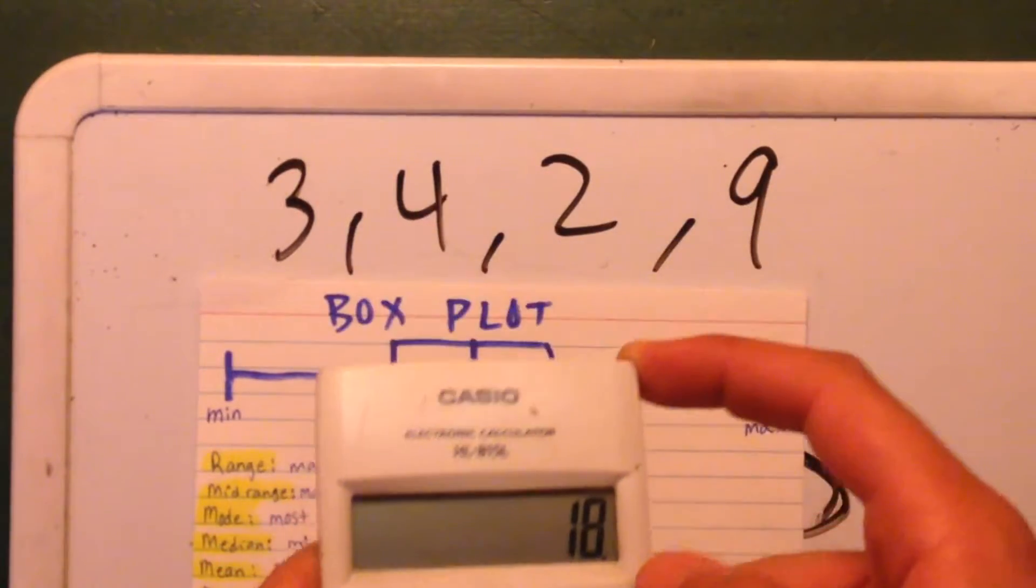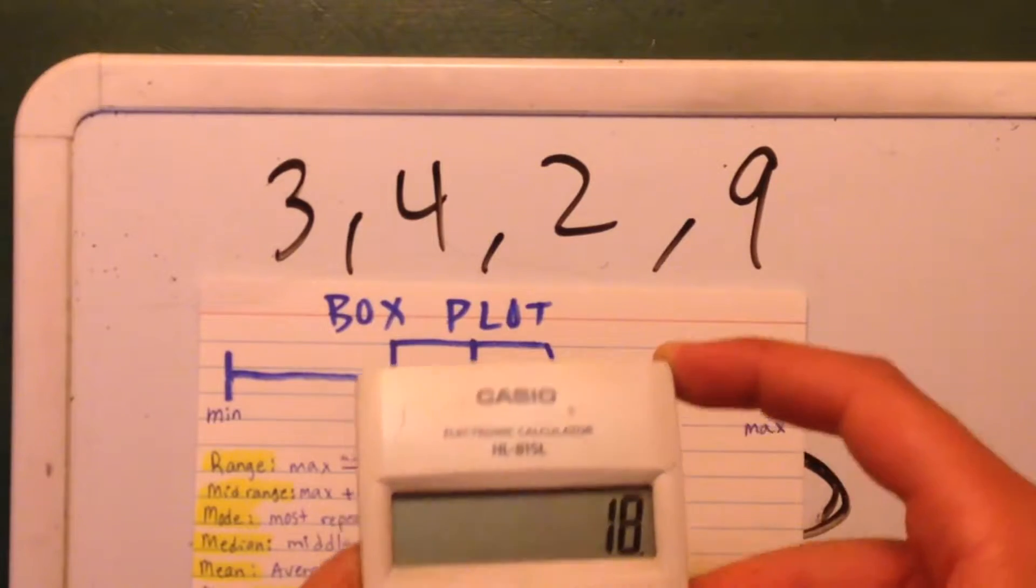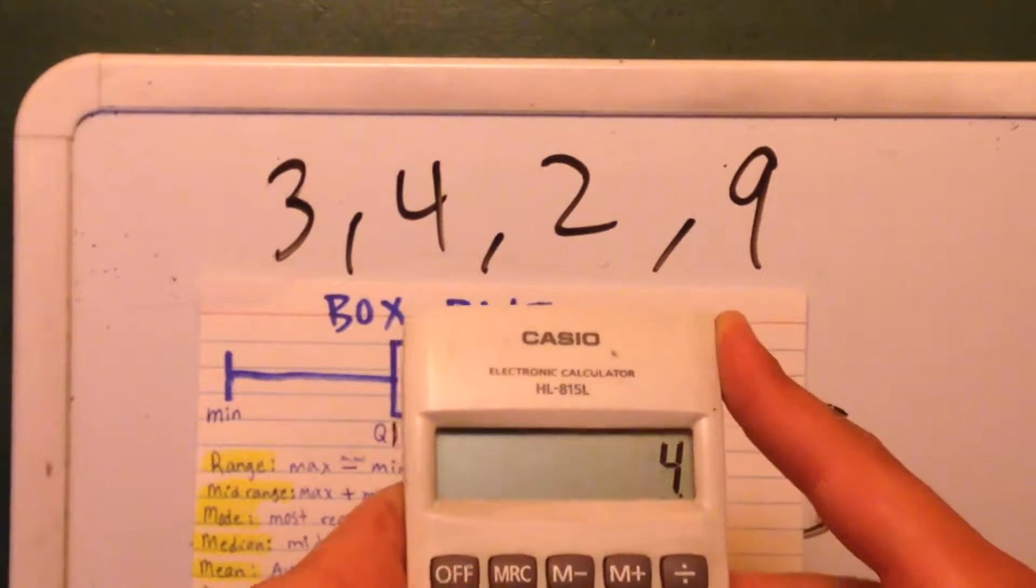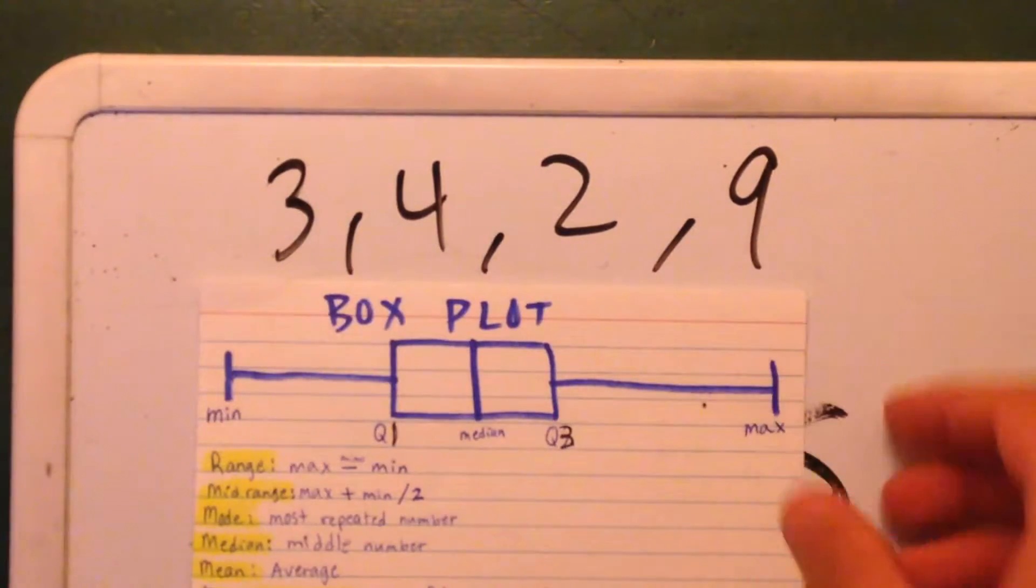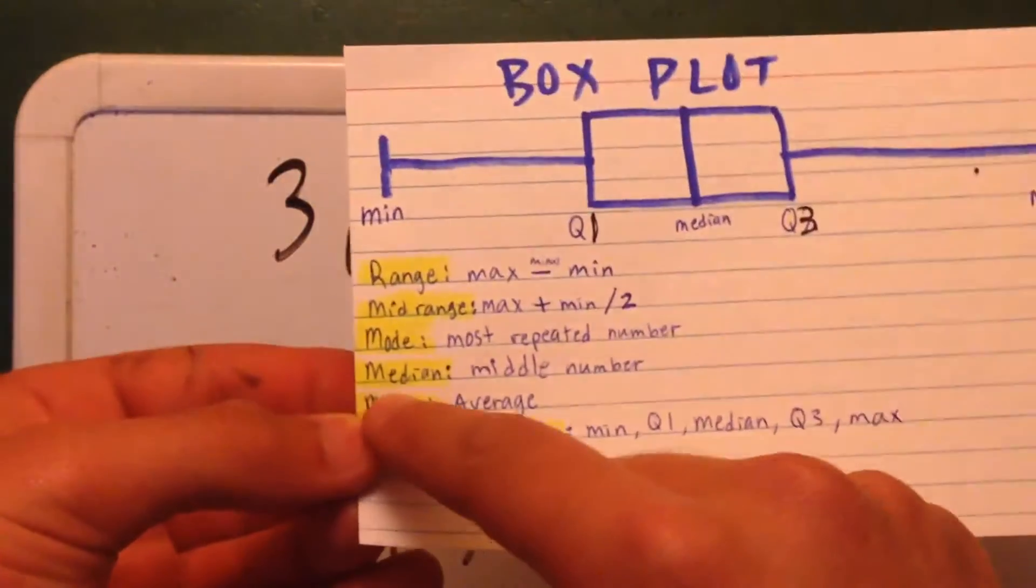Yeah, that's going to give us our mean. Divide by 4, which is 4.5. So as you see here, that's our mean.